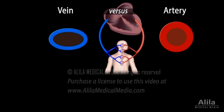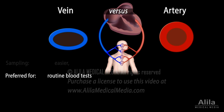For routine blood tests, veins are usually favored over arteries because they sit closer to the skin's surface, have thinner walls, larger lumens, and thus are more accessible.